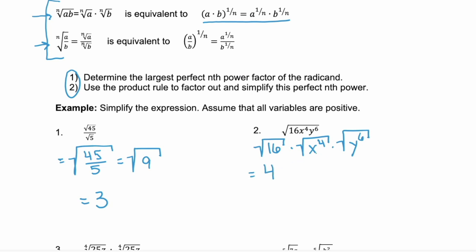Then we can use rational exponents to convert the square root of x to the fourth. That would be x to the fourth to the power of one half. And we can do the same thing with y to the sixth — that goes to the power of one half. Then remember, we multiply those exponents. So we have 4, and then x to the fourth times one half.